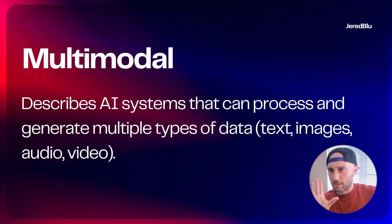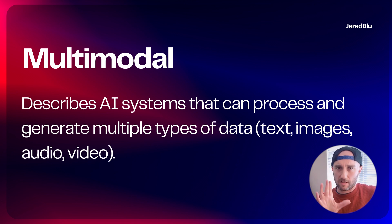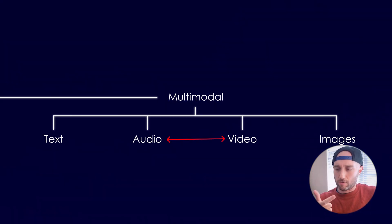One word you might hear next to LLM a lot is multimodal. What this means is that the AI can be interacted with via multiple sources, like text, video, sound, and pictures. At first, we were only able to interact with them via text, like ChatGPT when it started. But now we can send it pictures, we can chat with our voice and have back-and-forth conversation with things like advanced voice mode. That is what multimodal means.